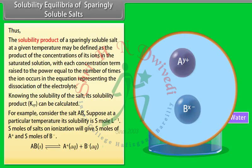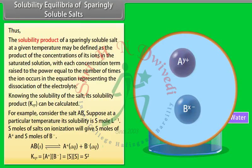For example, consider salt AB with solubility S mol L⁻¹. S moles of salt on ionization give S moles of A⁺ and S moles of B⁻. Therefore, Ksp = [A⁺][B⁻] = S × S = S².